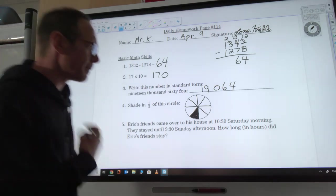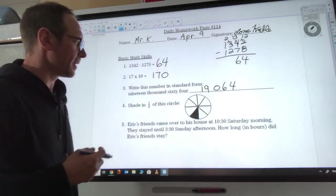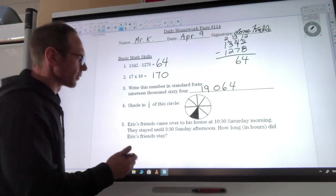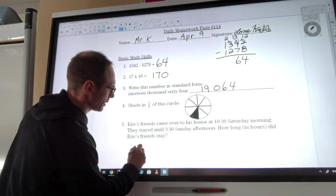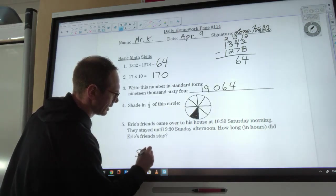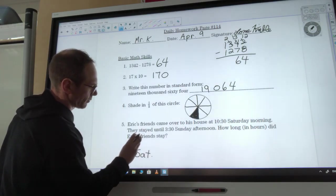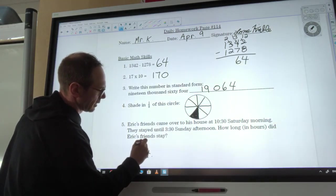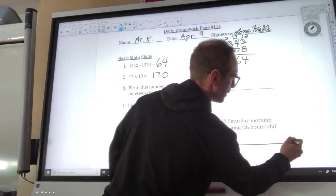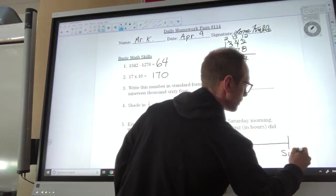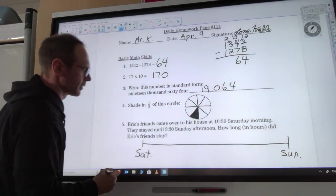For me, the easiest way to do this one is to remember that we have 24 hours in a day. So from Saturday morning, I'm gonna just draw it as kind of a timeline. We have Saturday morning, make a line, until they were picked up Sunday afternoon. How long is it gonna be?